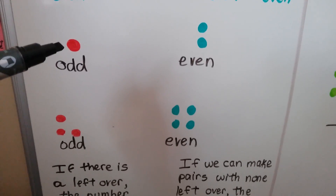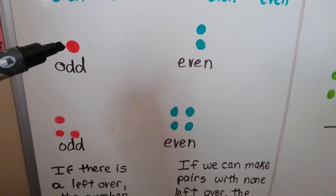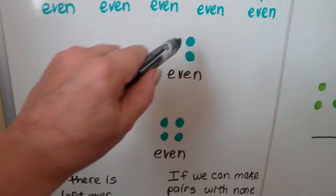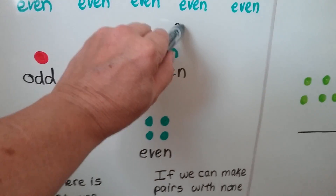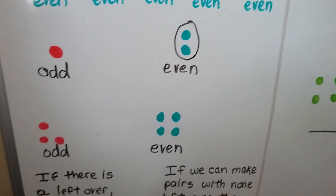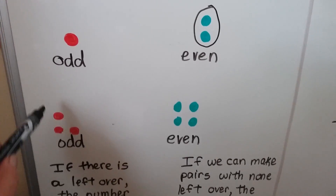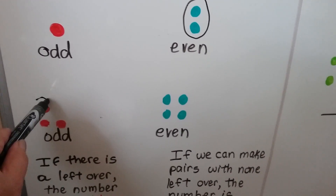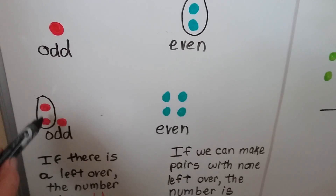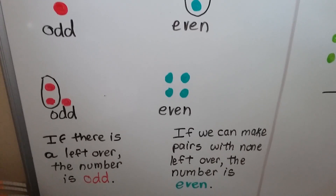That's an odd number — there's only one. That's an even number — there's two, we can make a pair. 1, 2, 3 — that's an odd number. We can make one pair and there's one left over, so it's odd.